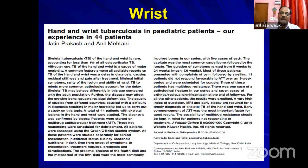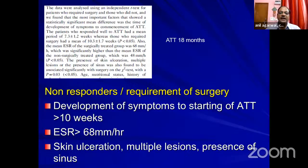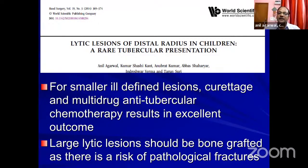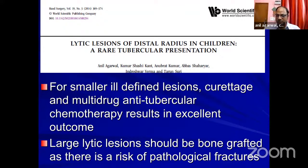Dr. Anil Mehtani from Delhi has published extensively on wrist tuberculosis. They categorized patients into responders and non-responders. Non-responders are identified when symptoms have been present for more than 10 weeks, ESR is very high, the lesion is accompanied with skin ulcerations, multiple lesions, or presence of sinuses. Our own experience has been similar — for smaller lesions, curettage and anti-tubercular therapy work well, but for large lesions we have to resort to bone grafting.